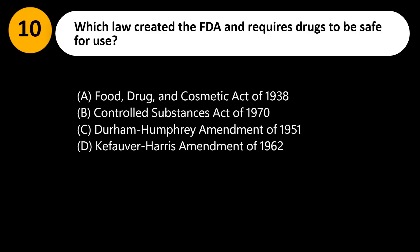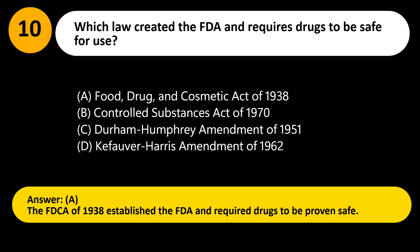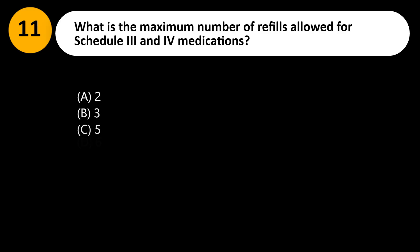Which law created the FDA and requires drugs to be safe for use? A. Food, Drug, and Cosmetic Act of 1938. B. Controlled Substances Act of 1970. C. Durham-Humphrey Amendment of 1951. D. Kefauver-Harris Amendment of 1962. Answer: A. The FDCA of 1938 established the FDA and required drugs to be proven safe.